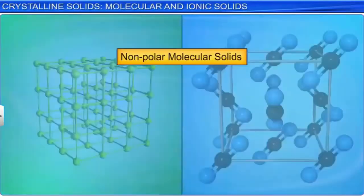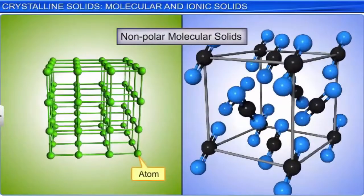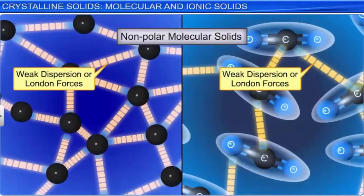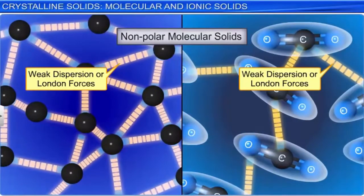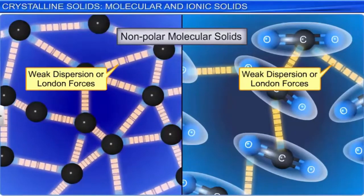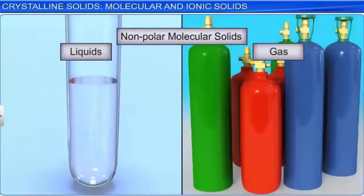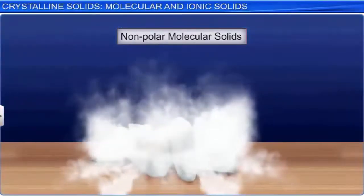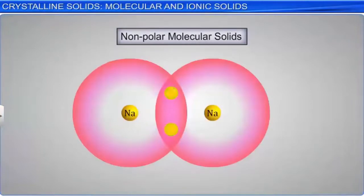In non-polar molecular solids, the constituent particles are either atoms or molecules, held together by weak dispersion or London forces. As a consequence, these molecules have low melting and boiling points. Hence, most of them are liquids or gases at room temperature and normal atmospheric pressure. For the same reason, they are soft. As the electrons remain localized to particular atoms or bonds, these are non-conductors of electricity.